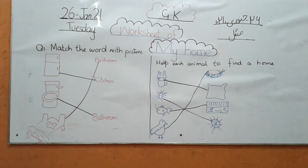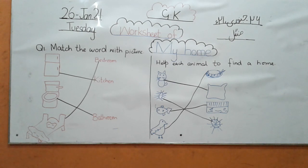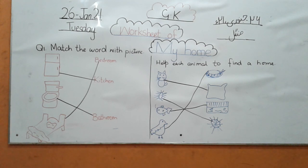So to recap: in question 1, cut the sofa and paste in the living room, cut the oven and frying pan and paste in the kitchen, cut the cupboard and paste in the bathroom, cut the bed and paste in the bedroom. Question 2, match the word with the picture. Question 3, cut the lamp, scenery, and boy and paste in their right places. Question 4, match cat with its home, spider with spider web, fish with the aquarium, sparrow with the nest, and dog with the hut.